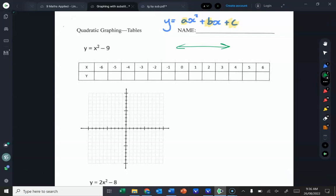So you're getting a string of x values, and you're going to sub them into the equation y equals x squared minus nine. By the way, I know that this is a quadratic because it's got an x squared.